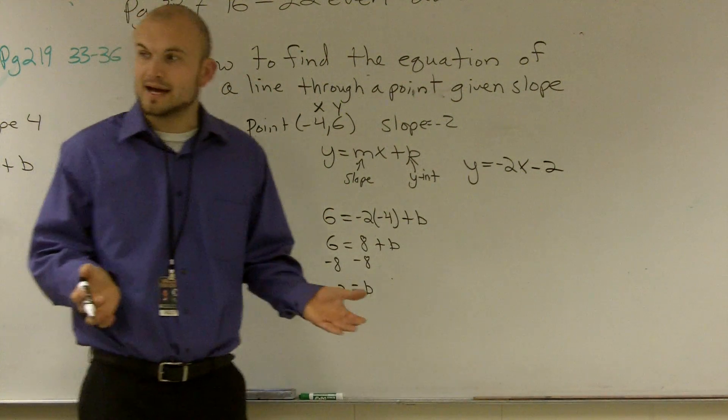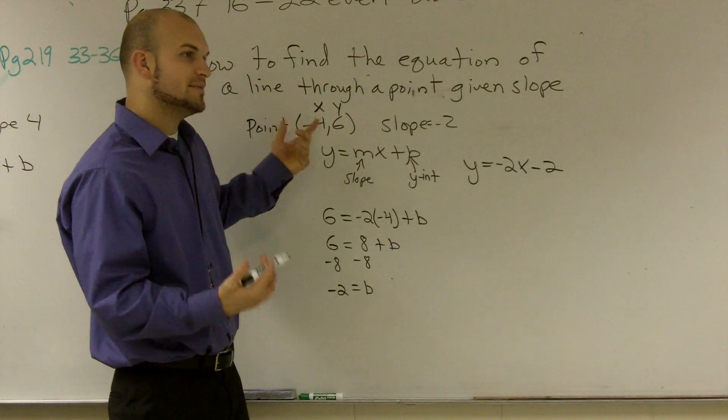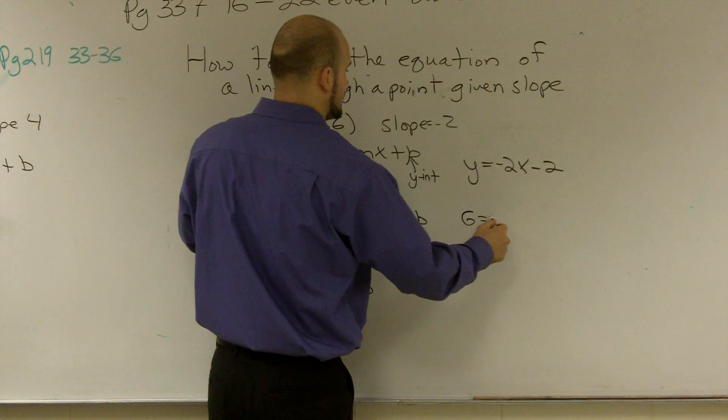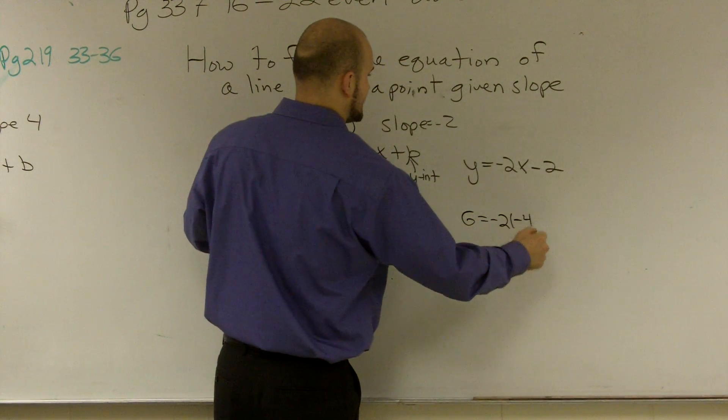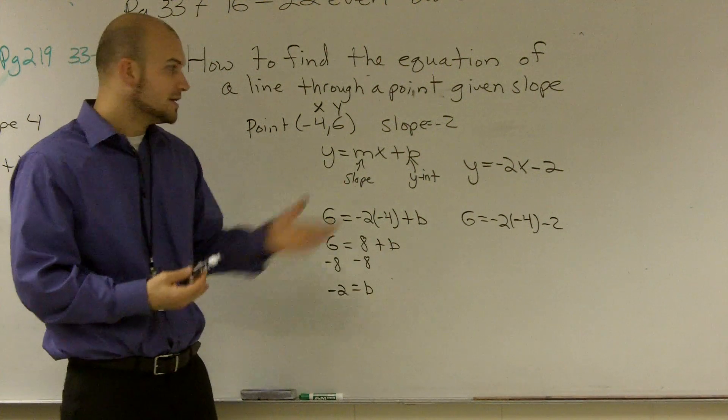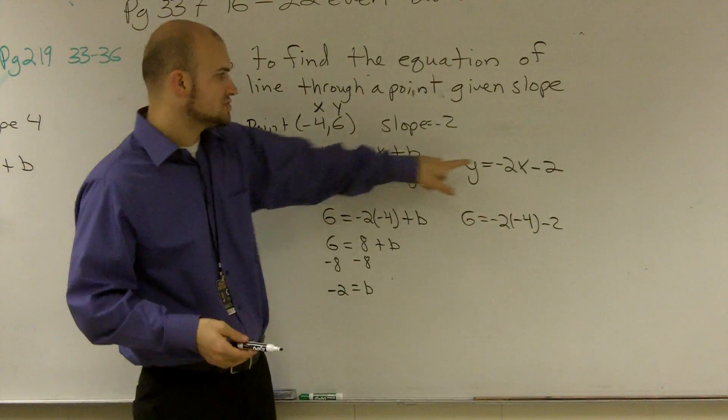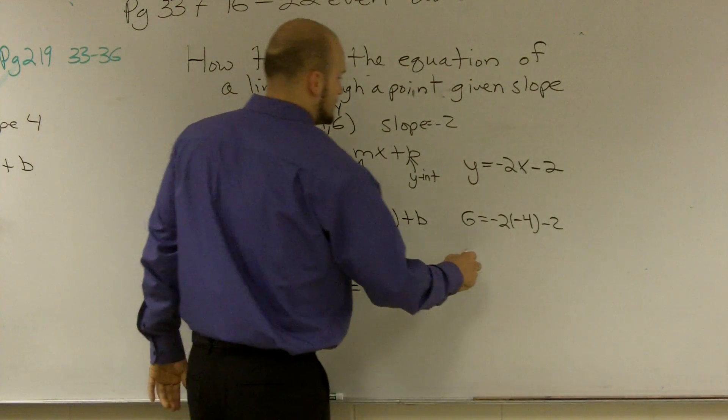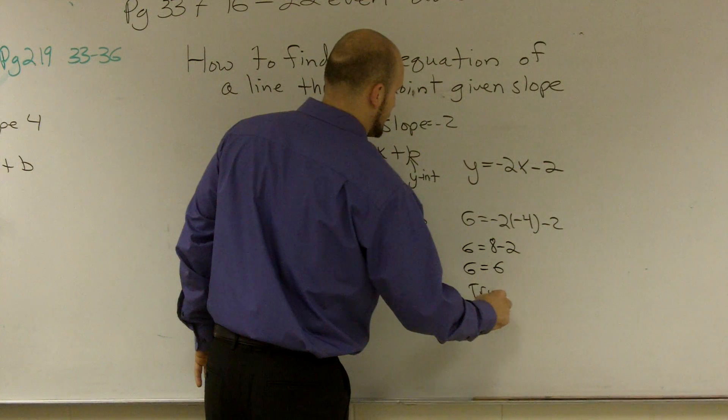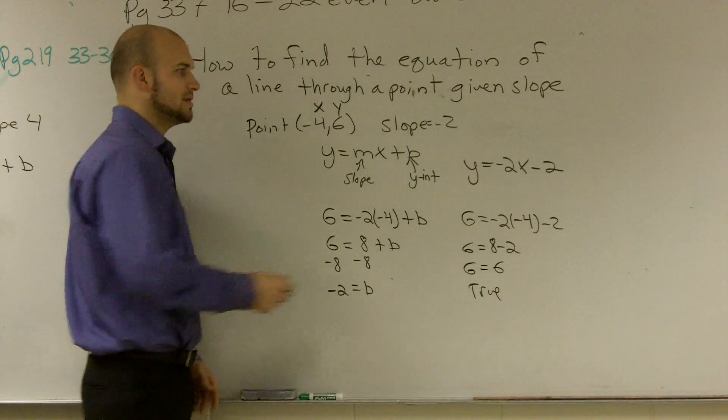And if I wanted to double check my answer, if it goes through this point, that means my equation is going to be equal. So I'll write in my point again. 6 equals a negative 2 times negative 4 minus 2. If these two equations equal each other, then I know that this point goes through this line. 6 equals 8 minus 2. 6 equals 6. Therefore, it's true and my answer is correct.